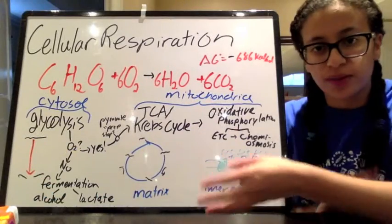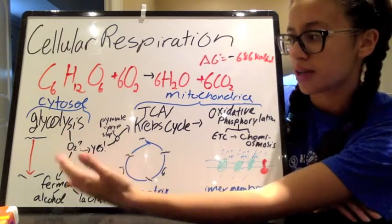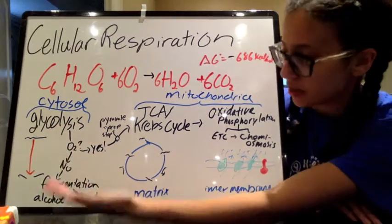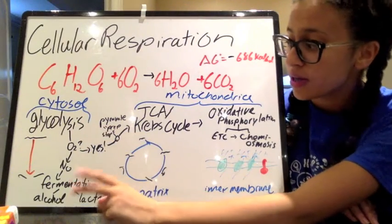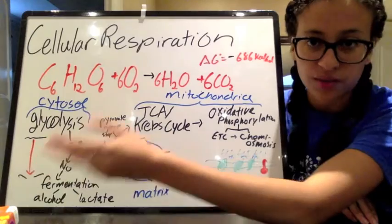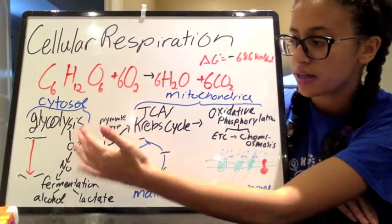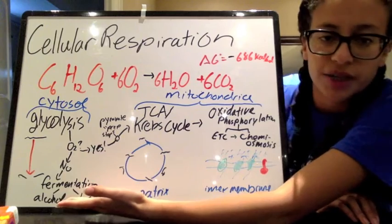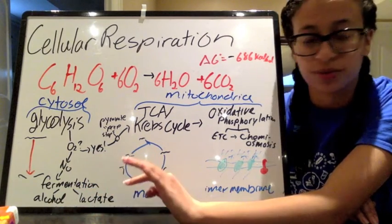So here we have an overview of all the steps of cellular respiration. It starts off in the cytosol with glycolysis, so you're taking glucose and you're breaking it up into two pyruvate molecules. Now that part happens in all cells whether it be anaerobic or aerobic. So doesn't have oxygen, then no problem, we'll just do fermentation. There can be alcohol fermentation or lactate fermentation, we'll talk more about those in a later video.